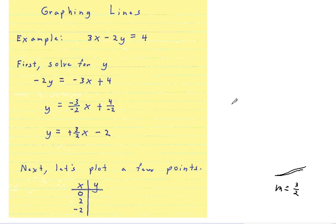I'm going to put 0 in first. So what I do is I go 3 halves times 0 minus 2. And of course, this term just goes to 0, so my value is negative 2 here. So when x equals 0, y equals negative 2.